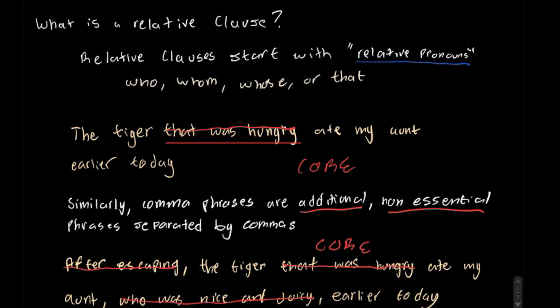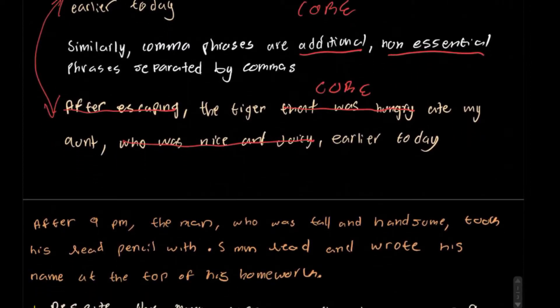Again, this is crucial because it makes understanding the sentence way easier. When first reading it, you may be a little confused. What is the author trying to say? By eliminating these relative clauses and comma phrases, it's exactly the same sentence as here. However, this has additional details that are not needed to understand the sentence. So, here's a more complicated example here.